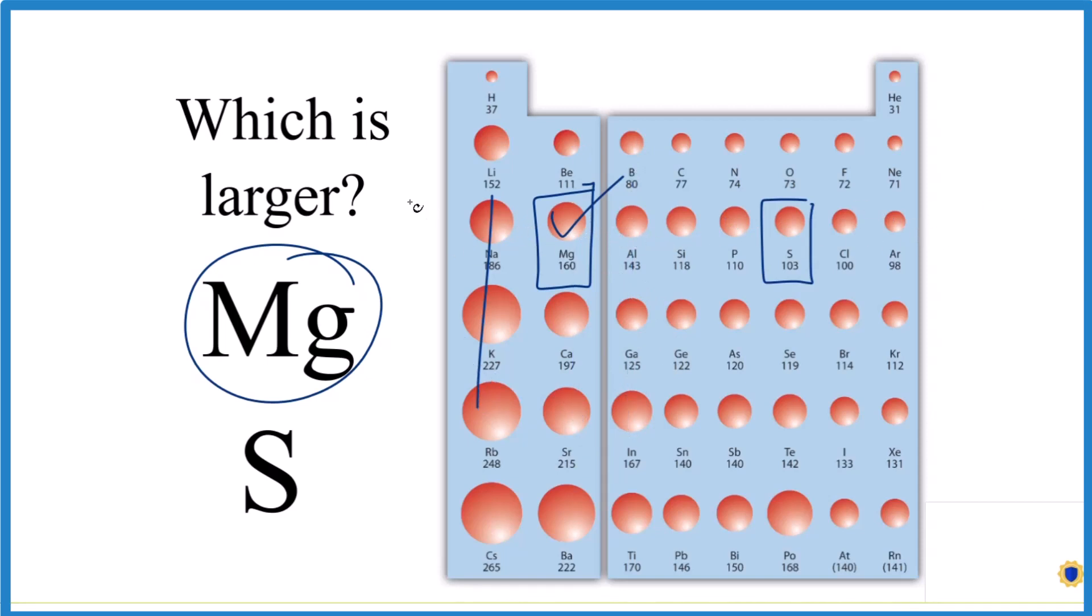That's it. This is Dr. B taking a look at which atom is larger, has the larger atomic radius, magnesium or sulfur? The answer is magnesium. Thanks for watching.